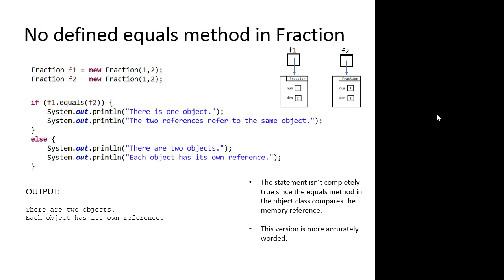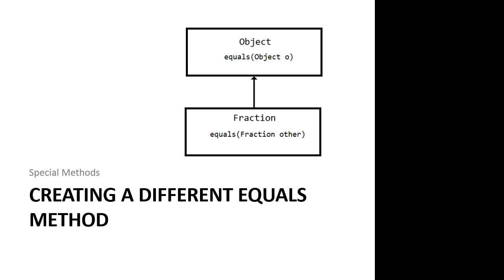So it's really important: the default equals method, which is defined in the object class, compares memory references. That's not really great if we want to compare fractions, because probably we want to compare if the numerators and denominators are the same. So the first technique is to create a different equals method.